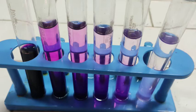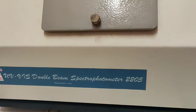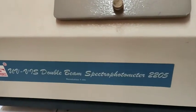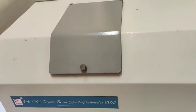Then we will add water to all these test tubes, and you can see easily that five different test tubes have five different concentrations of solution. Now this is our spectrophotometer — UV-visible double beam spectrophotometer, model number 2205. What we can see here is a sample chamber.